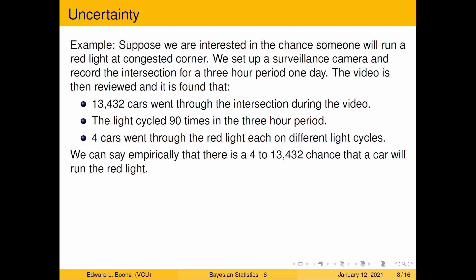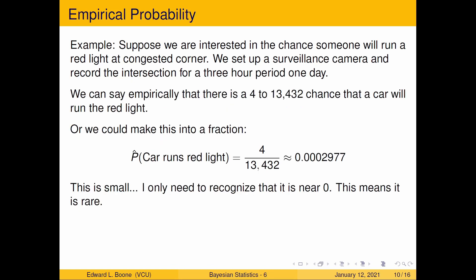That's kind of hard to interpret or kind of hard to think about. So you have to kind of do the math in your head. Well, what you could do is just turn it into a fraction. And that's what empirical probability is. We're just going to turn this into a fraction here. P-hat means this is going to be our estimated probability. And here's the event we're interested in: the car runs a red light. It's going to be 4 over the number of times we looked, which is approximately 0.0002977. You don't have to know what that number means. You only have to recognize that it's near zero, which means it's rare.